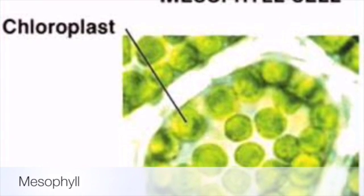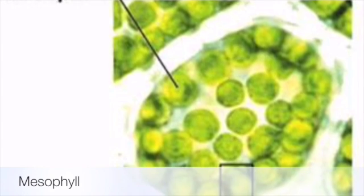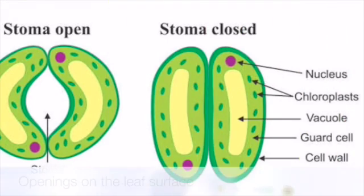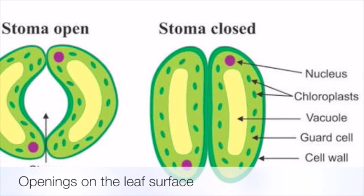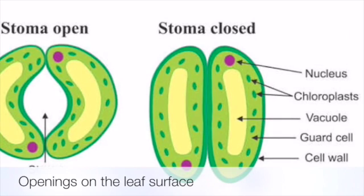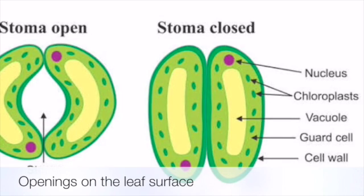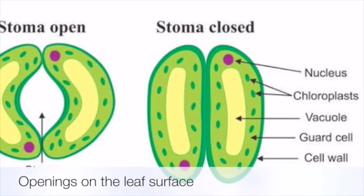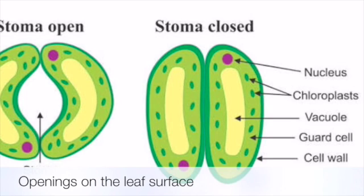It is important to note that the process of photosynthesis occurs in specialized cells called the mesophyll. In order for the process to completely take its shape, the carbon dioxide enters the leaf through openings or pores on its surface called the stomata. This is done through the process of diffusion, which causes the movement of carbon dioxide from an area of higher concentration to lower concentration.